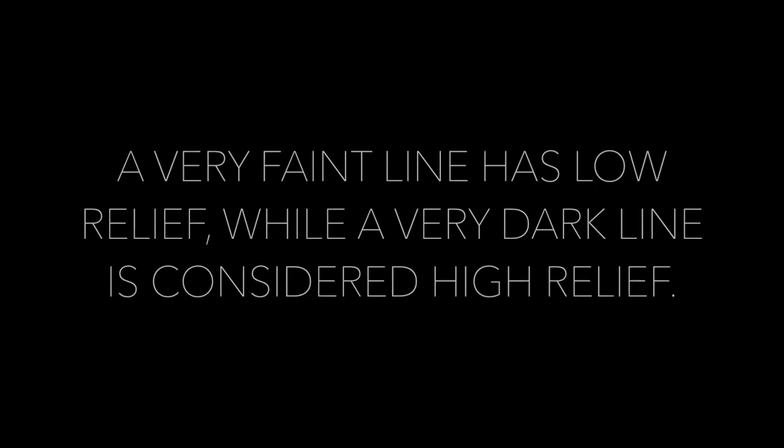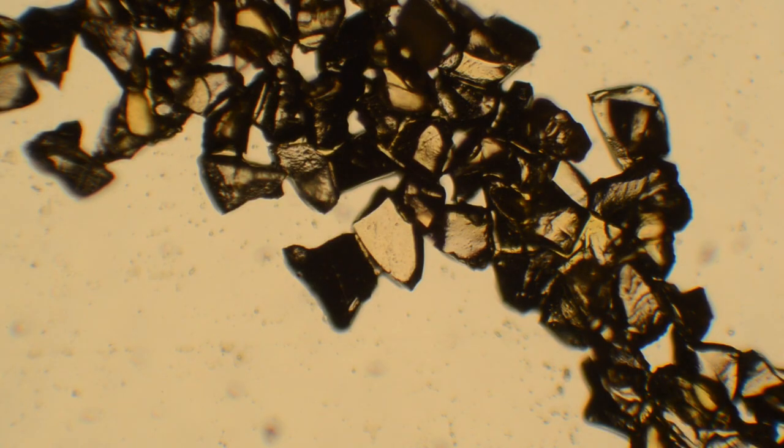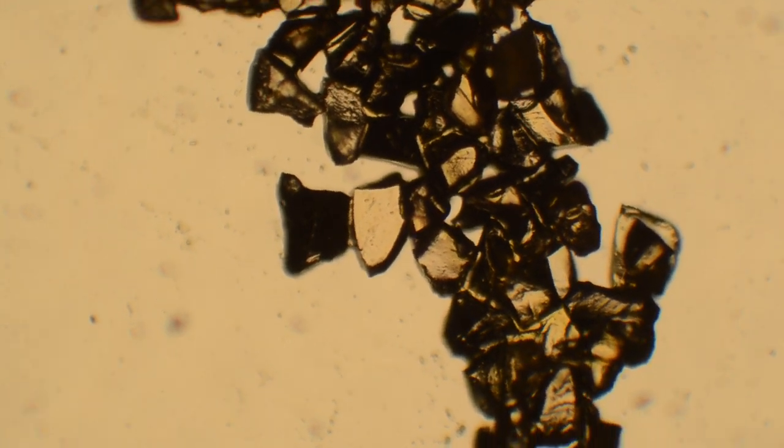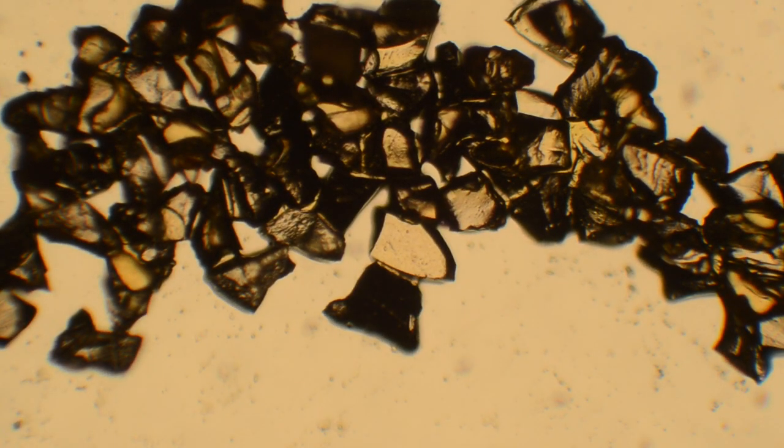Next we will determine if a mineral has low, medium, or high relief. We do this by observing the appearance of the thickness of the grain boundary. A very faint line has low relief, while a very dark line is considered high relief. Here is an example of a mineral with high relief. Notice how the appearance of the grain boundary is significantly thick and quite pronounced.